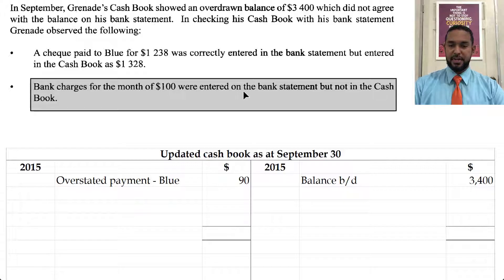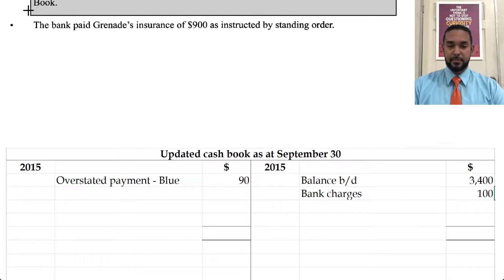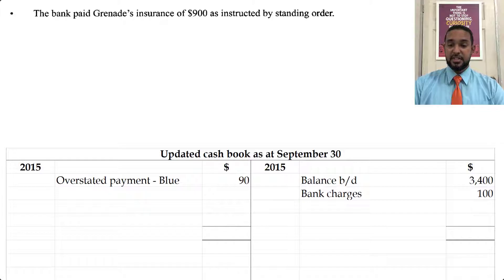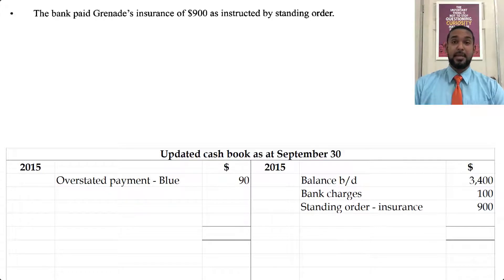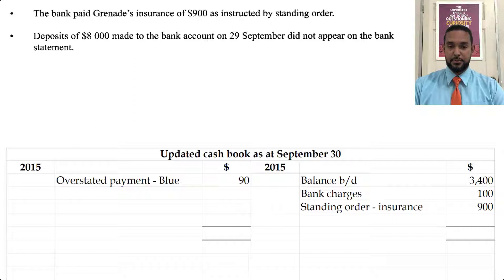Bank charges of 100 were entered on the bank statement but not in the cash book. Bank charges reduce the amount in the bank account, so we're going to have to credit the cash book for that. The bank paid Grenade's insurance of 900 by standing order — that's a payment in the bank statement but not in the cash book, so we credit the cash book. Payments reduce the amount of money in the bank; bank is an asset, and to record a reduction in an asset you credit the asset account.